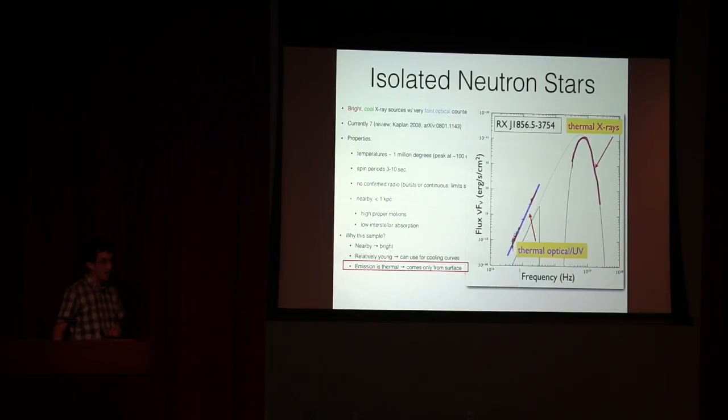It's just an example of that. Here's the first one that was discovered, the canonical one of this class. You see a very thermal x-ray spectrum, maybe a few indications that it's not quite a pure black body, but it's still entirely thermal.